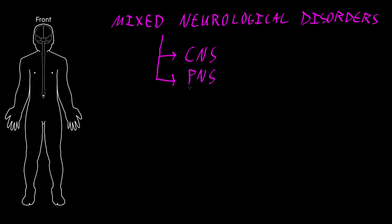When these disorders affect the peripheral nervous system, they most often cause a polyneuropathy. And this is usually the most common polyneuropathy syndrome of a length-dependent polyneuropathy.